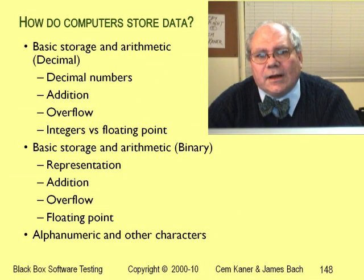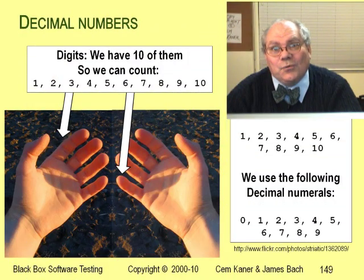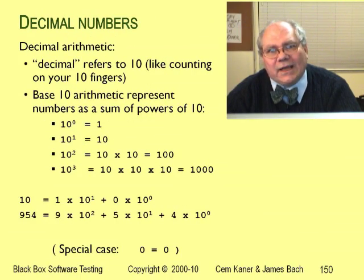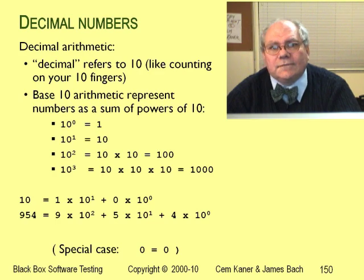We're going to start by considering how computers store data and do arithmetic. And that starts with how we do arithmetic. We work with a ten-digit number system. We have ten distinct numerals, zero through nine. We can represent any number as a power of ten or as a sum of powers of ten. For example, 954 means 900, that's 9 times 100, plus 50, that's 5 times 10, plus 4.